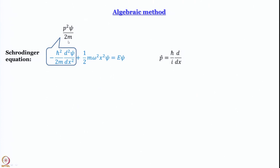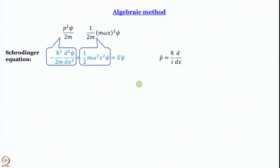For the second term, we have mω²x², which can be written as (mωx)²/m. Doing so, the second term also has 2m in the denominator, matching the first term, so we can factor out 1/(2m). We rewrite the two terms on the left-hand side as (1/2m)[p² + (mωx)²]ψ = Eψ. This together is the Hamiltonian operator operating on ψ. Note that x here is really the position operator as well.